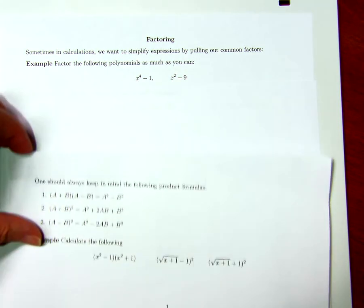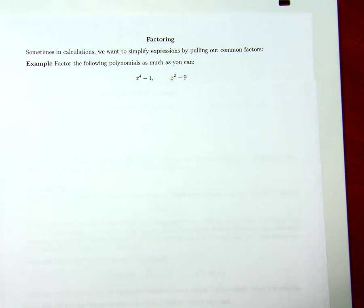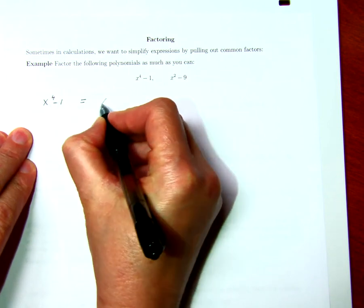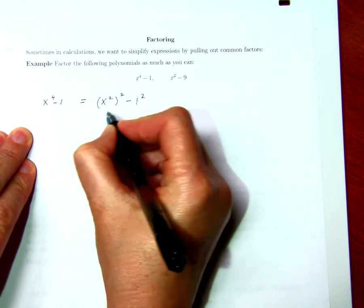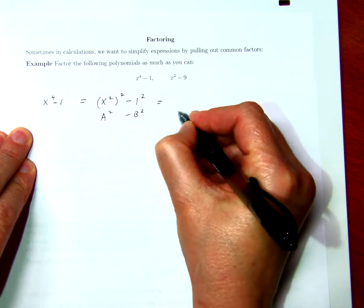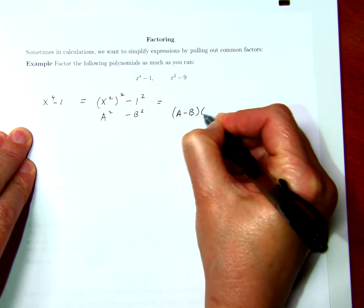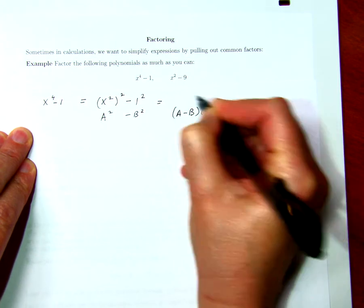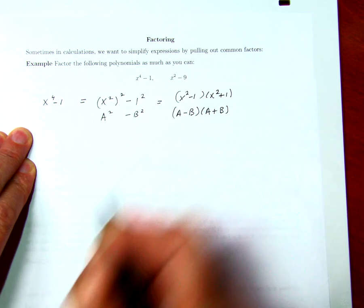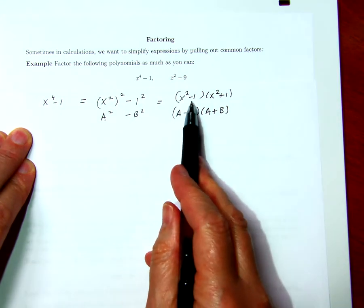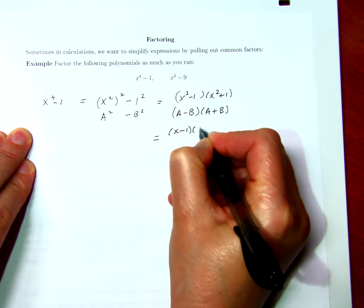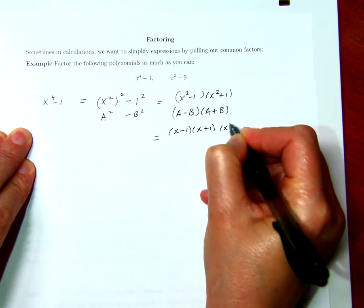Suppose we want to factor x to the fourth minus 1. That's equal to x squared squared minus 1 squared, so here we have a squared minus b squared, and I know that equals a minus b times a plus b. So that's x squared minus 1 times x squared plus 1. Now I can apply the same reasoning here, I have the difference between two squares, so that's equal to x minus 1 times x plus 1 times x squared plus 1.